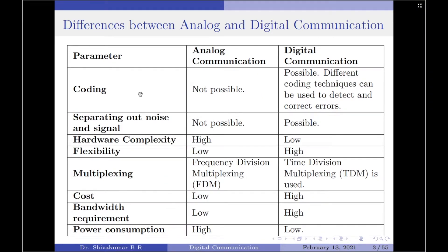The next parameter is coding. Coding will be highly helpful in representing data before transmission. In analog communication, coding is not possible or can be considered considerably complex, whereas in digital communication coding is possible. Different coding techniques can be used to detect as well as correct errors.